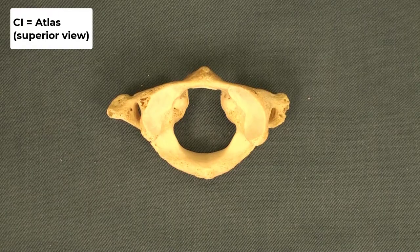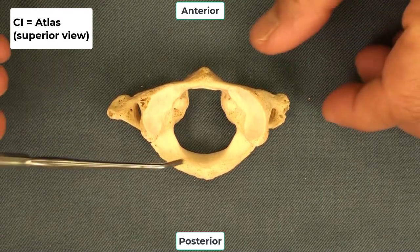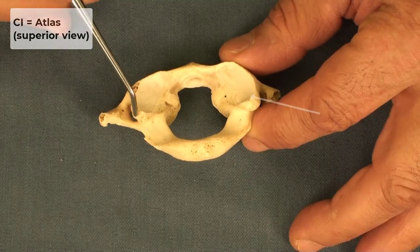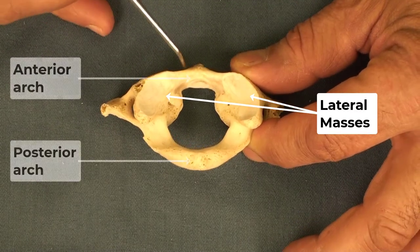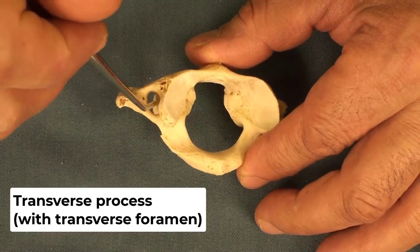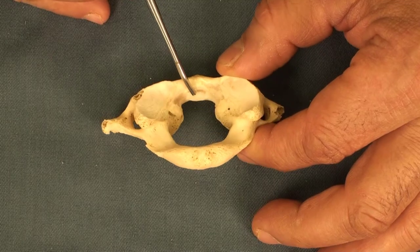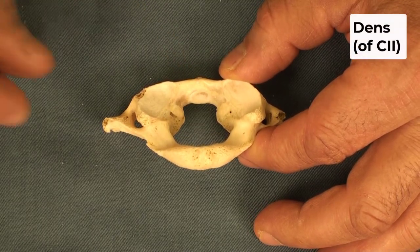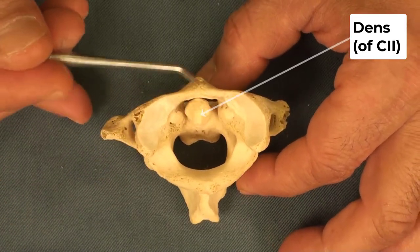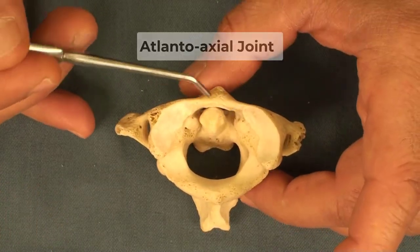We are looking at the first cervical vertebra, also known as the atlas, which is a completely atypical cervical vertebra because it doesn't have the body, it doesn't have the lamina, and it doesn't have the pedicle. What it has is two lateral masses, one on each side, and the anterior and posterior arches. It does have the transverse process and the transverse foramen. On the posterior surface of the anterior arch, there is a small articular surface for the dens of the second cervical vertebra. When they articulate together, the dens articulates with the anterior arch — rotational movements of the head happen at this atlanto-axial joint.